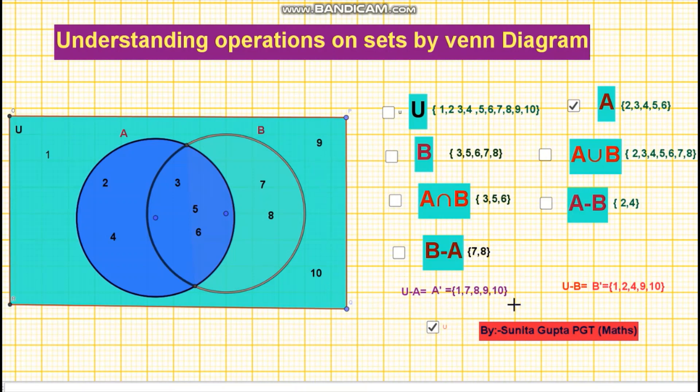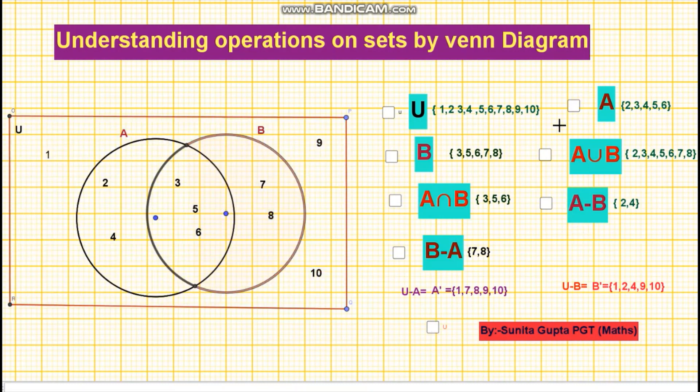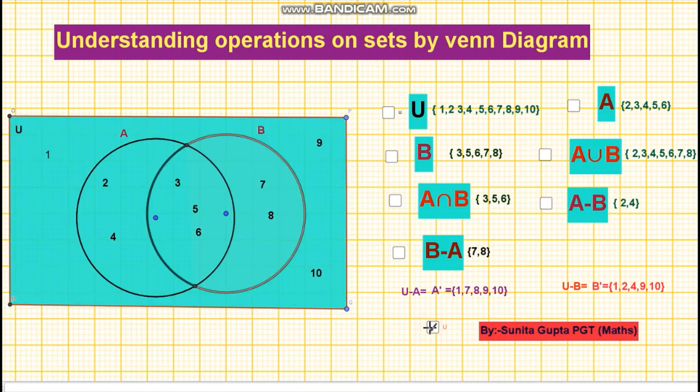Similarly for complement of set B, this is set U and this is set B. So, complement of set B is the light blue color region. Elements are 1, 2, 4, 9, 10.